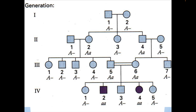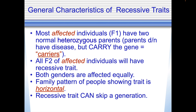You can see affected individuals in the fourth generation — individuals two and four in that generation. General characteristics of recessive traits: most affected individuals have two normal heterozygous parents that don't have the disease but carry it — these are called carriers. Both genders are affected equally. For autosomal disorders, the family pattern of people showing the trait is horizontal, and a recessive trait can skip a generation.